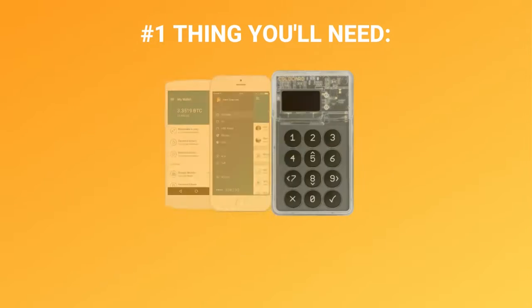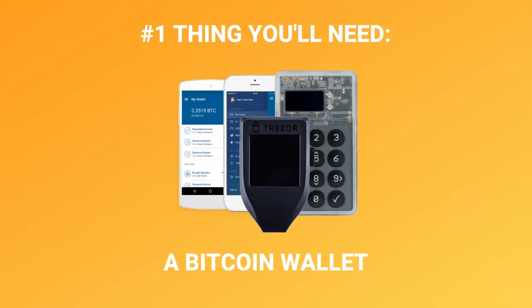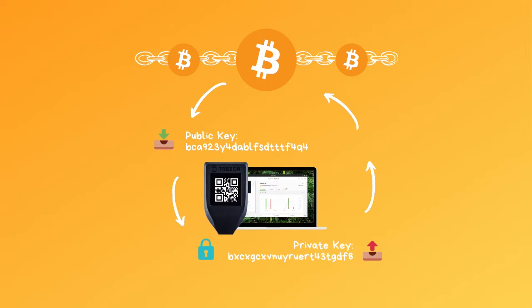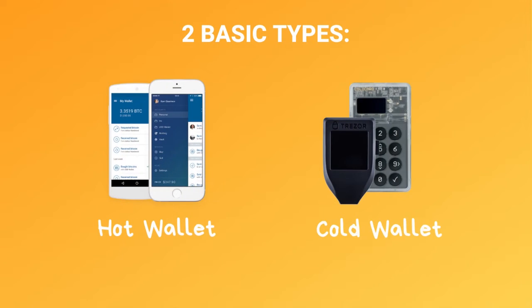The first thing everyone needs to get started is a grasp on what a Bitcoin wallet is. This is where you're going to be storing your Bitcoin. A Bitcoin wallet is software where you store your keys to access your Bitcoin on the blockchain — essentially where you store and transact your Bitcoin. There are two types to consider: a hot wallet and a cold wallet.